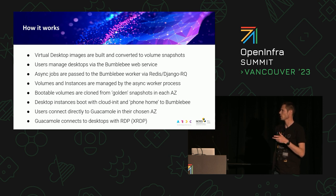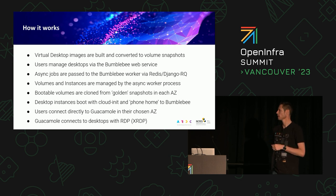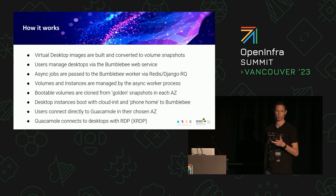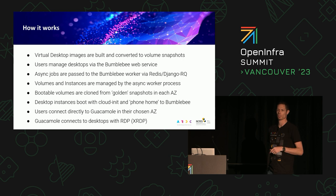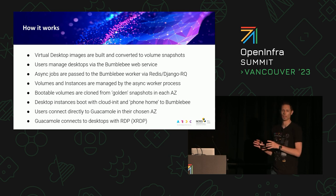The job goes via a Redis database to a worker, which calls the OpenStack APIs and does all the processing. It all happens asynchronously and users get a progress bar. The bootable volumes are cloned from snapshots. When the desktops come up, they're fed a cloud-init config that provisions the user account. At the end, there's a phone-home system that calls a webhook within Bumblebee so it knows the instance is ready. Users are then given a big green button saying 'go to my desktop,' which links directly to a Guacamole server in their availability zone to improve latency.